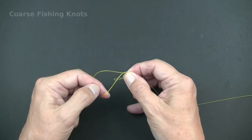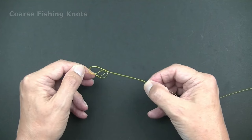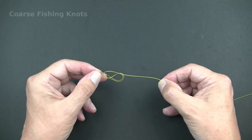Reach through the loop, twist it and pull a small loop back through the bigger loop. You should now see the Figure Eight in the line.